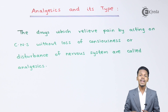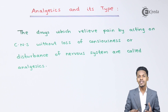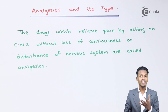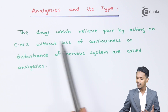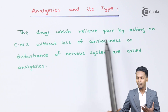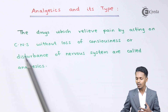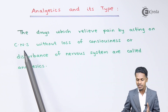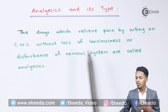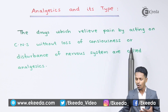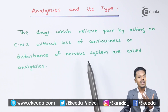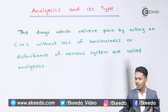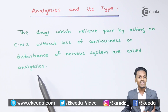Before understanding the types of analgesic, let us understand the definition of analgesic. The drugs which relieve pain by acting on the central nervous system without loss of consciousness or disturbance of the nervous system are called analgesic.